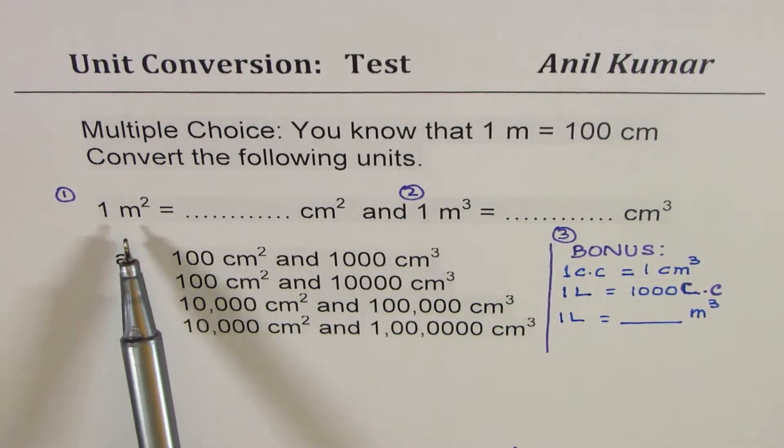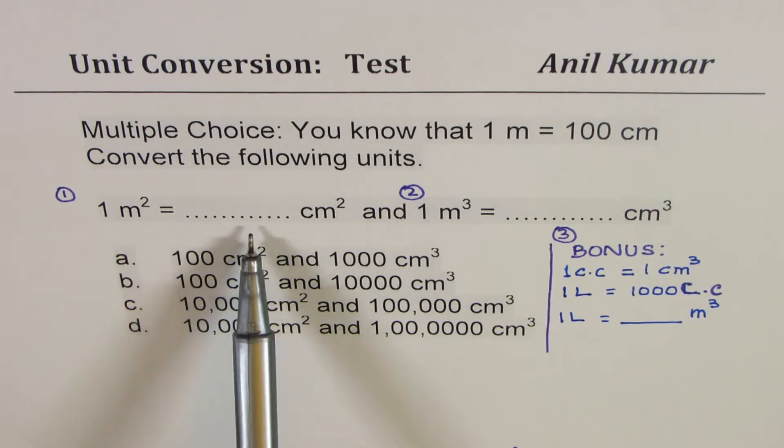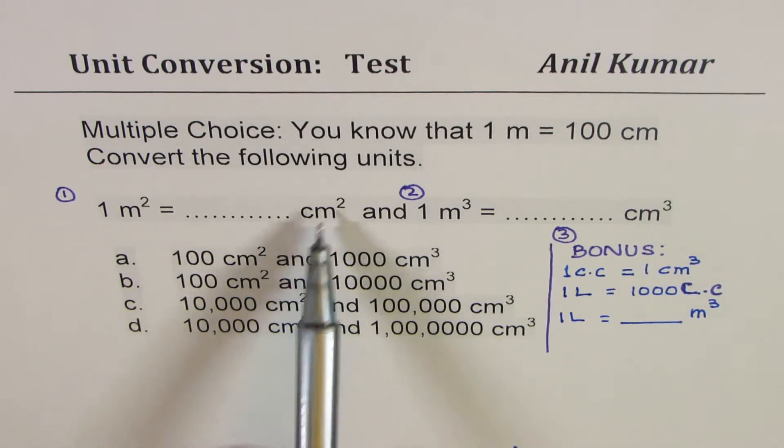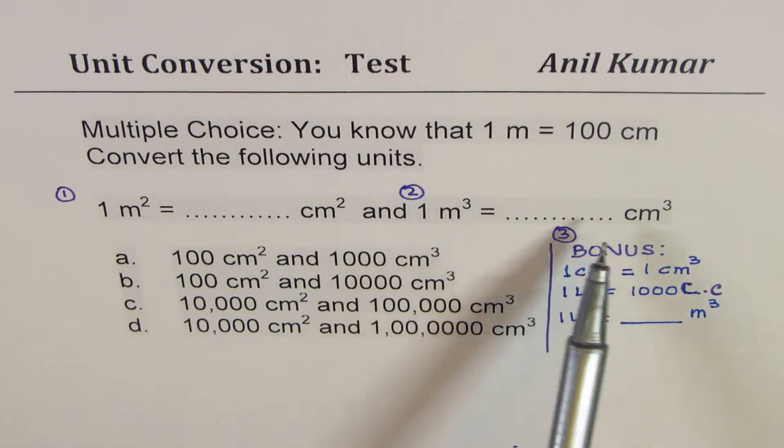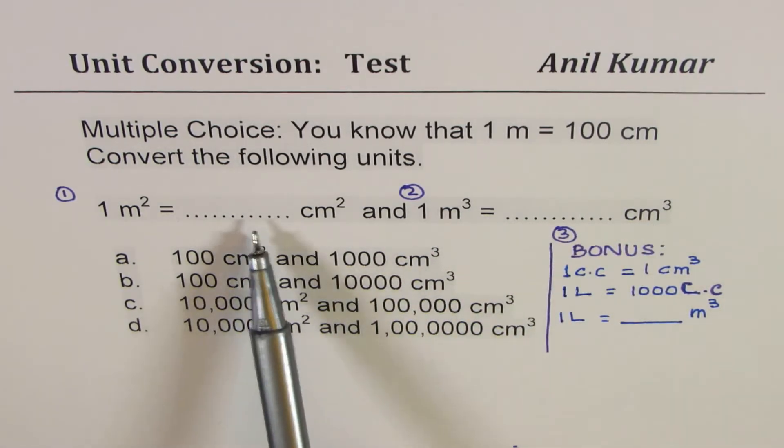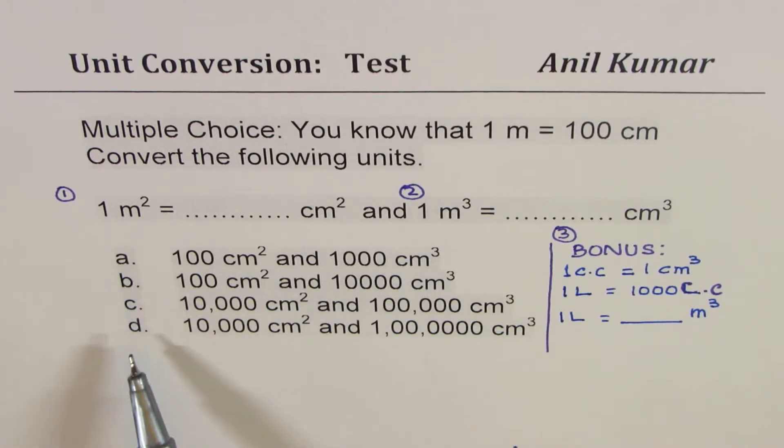The first one is one meter square is equal to how many centimeters square? Second question is one meter cube is equal to how many centimeters cube. Now for these two questions, we have four choices.